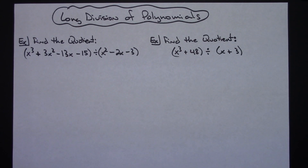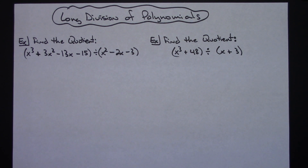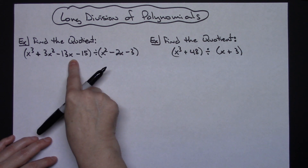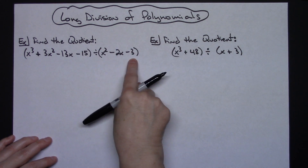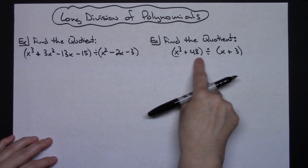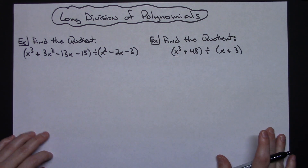In this video we're going to be doing two examples of long division of polynomials. This would typically be in an Algebra 2 class and possibly even in a college algebra class if you were reviewing this concept. Your problems are going to look like 'find the quotient' — you're going to have a polynomial divided by another polynomial. They can be long and in standard form, they can be short and have some missing terms.